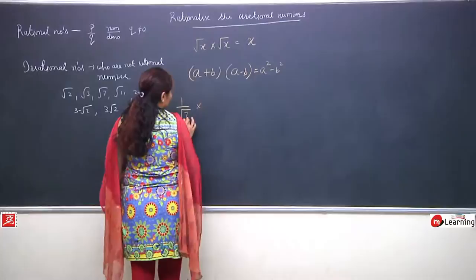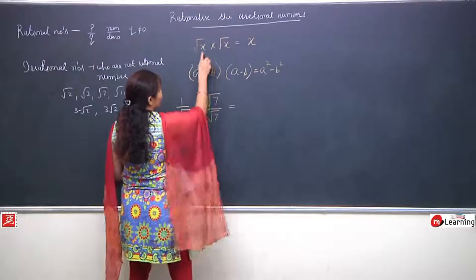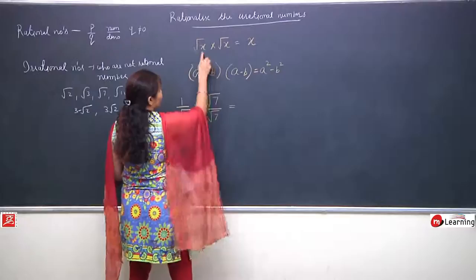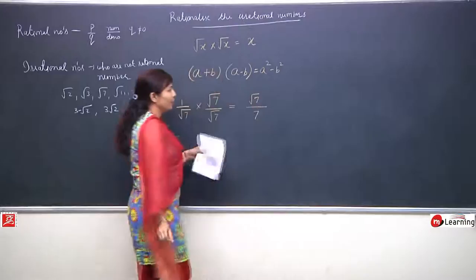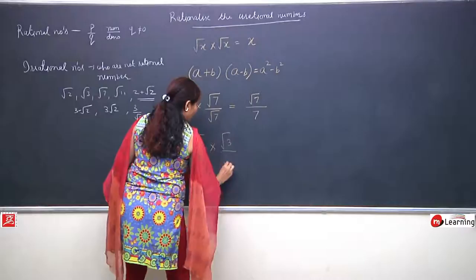So what will we do? Whatever is in the denominator, we multiply by that same number and divide by that same number. The property applies at the bottom: root x multiplied by root x is x. And in the numerator, 1 into root 7 will be root 7. Now this has become easy for us. Another question: I have 5 by root 3.